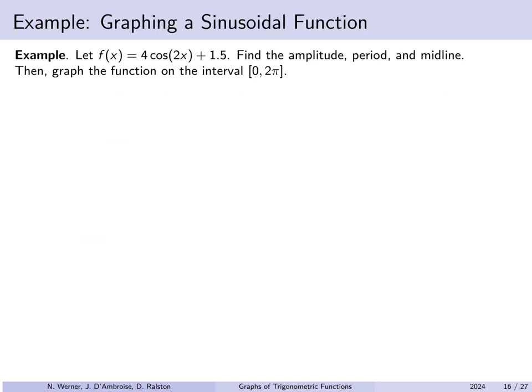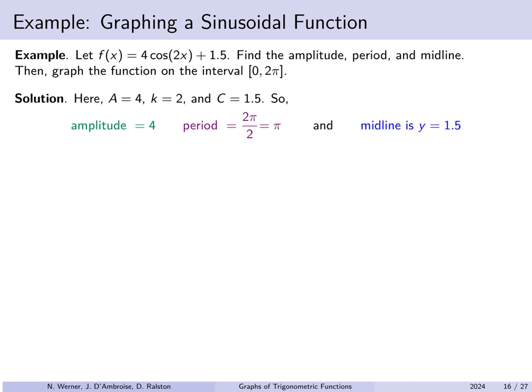For example, suppose f(x) = 4cos(2x) + 1.5. We find the amplitude, period, and midline, then graph on [0, 2π]. Here a = 4, k = 2, and c = 1.5. The amplitude is |4| = 4. The period is 2π / 2 = π. The midline is y = 1.5 — typically the easiest one to read off.